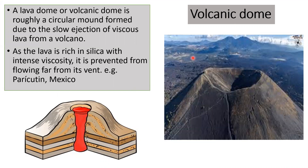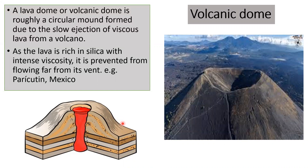A lava dome or volcanic dome is a roughly circular mound formed due to the slow ejection of viscous lava. Viscosity refers to the thickness of lava. As the lava is rich in silica with intense viscosity, it is prevented from flowing and just oozes out very lazily from its vent. An example is Paricutin of Mexico. Lava domes typically do not have enough gas or pressure to erupt explosively, although they may sometimes be preceded or followed by explosive activity.